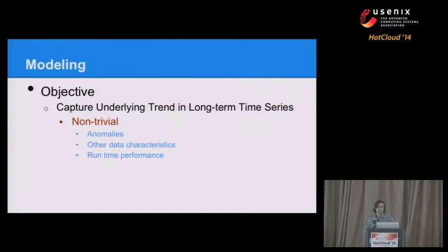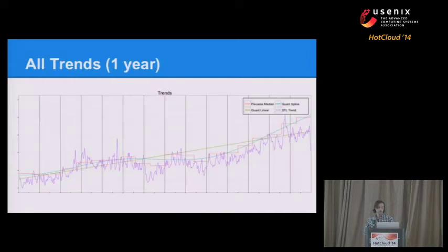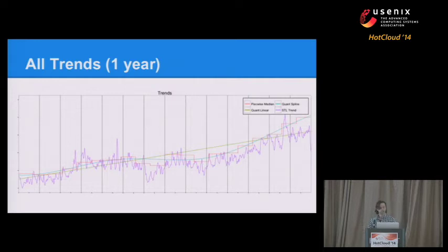We went back to the drawing board wanting anomaly detection that's fast for long time series. We tried basic STL decomposition for the trend. We also looked at quantile regression using a B-spline or something simpler. Looking at all trends for a year's worth of data overlaid, STL chased the data too closely and wasn't a good indicator of average day-to-day use. A linear regression didn't fit well either. B-spline fit very nicely, so we started to look at that, but there were some challenges using quantile regression with a B-spline fit.